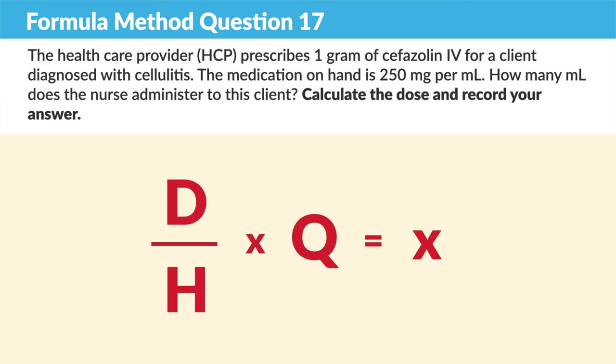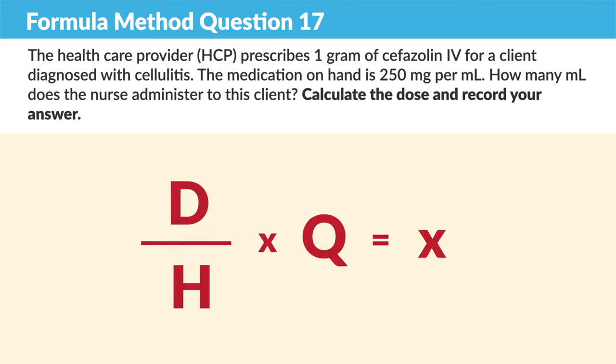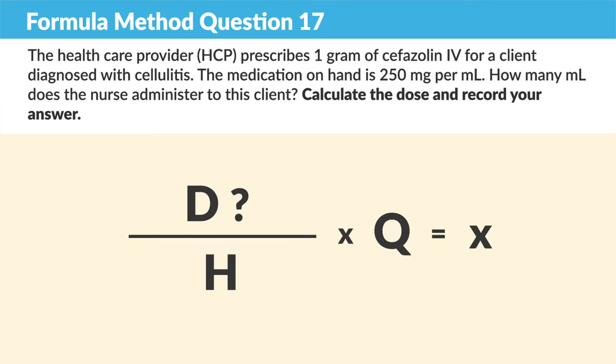So desired over have, times the quantity. What is the D — the desired dose, or basically the doctor's order? D is 1 gram.